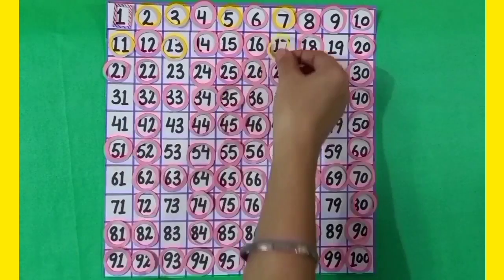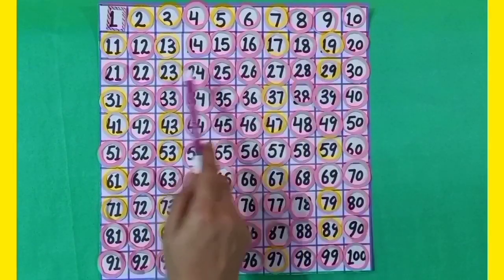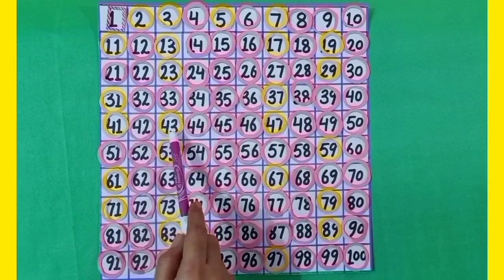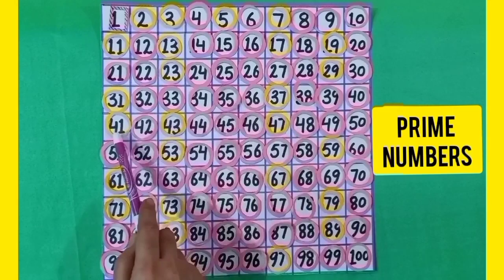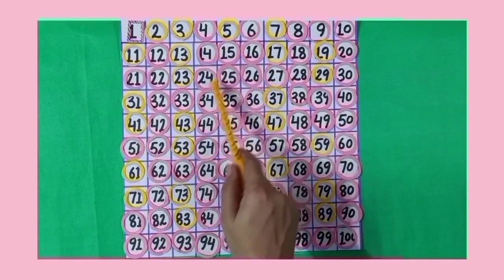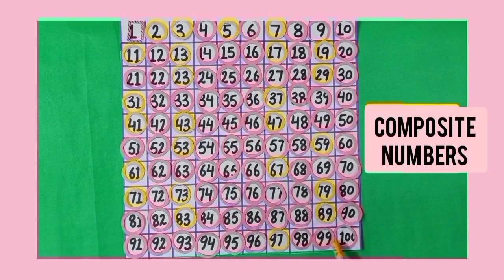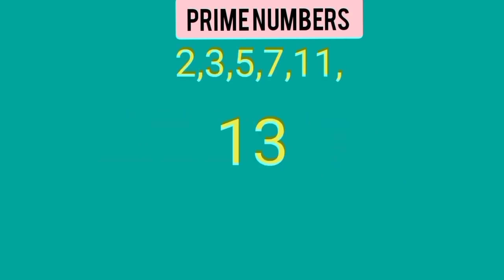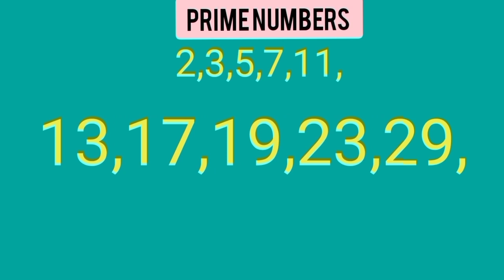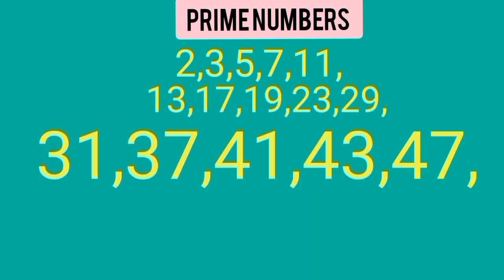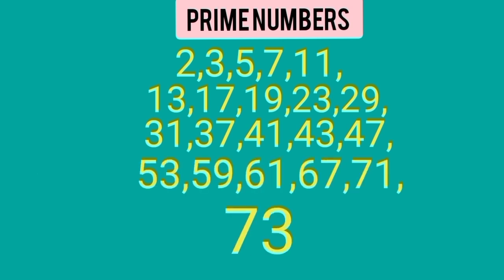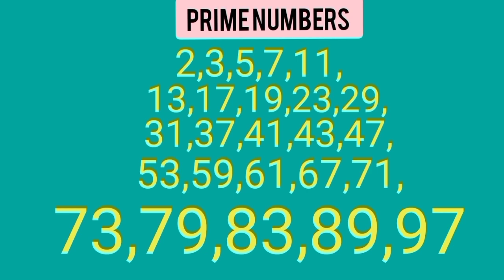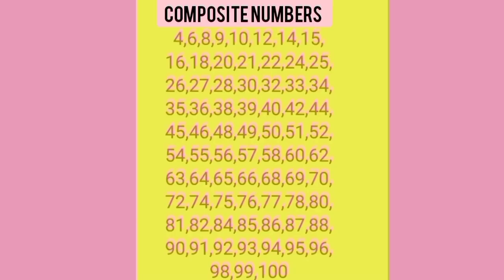We have encircled 11, 13, 17, and all other remaining numbers with yellow color. Dear students, all these numbers encircled with yellow color are prime numbers, and all the numbers encircled with pink color are composite numbers. So, prime numbers are: 2, 3, 5, 7, 11, 13, 17, 19, 23, 29, 31, 37, 41, 43, 47, 53, 59, 61, 67, 71, 73, 79, 83, 89, and 97. Excluding 1 and prime numbers between 1 to 100, all other numbers are composite numbers.